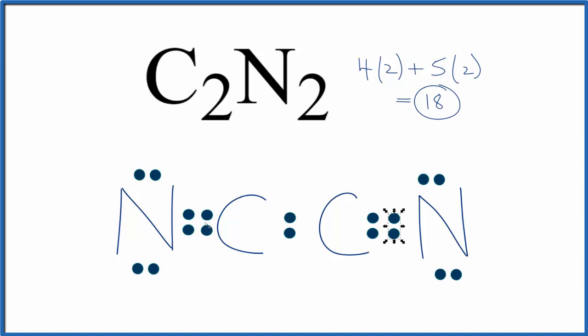Now we still have eight on the nitrogen, but this carbon has eight. It has an octet. So let's do it over here.